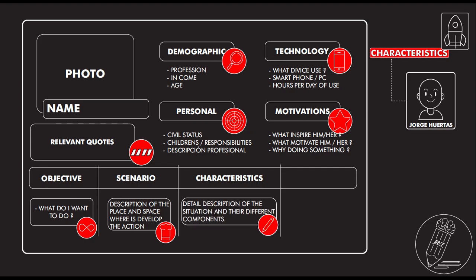Characteristics require a detailed description of the situation under different components. When you start the description of something, it means you have figured out a way to approach it. Having a lot of information is very good for your development. Actions — what do you need to do to reach your goal — are also very important, because if you are making a product or service, you need to find out how you can make it appealing to that person.